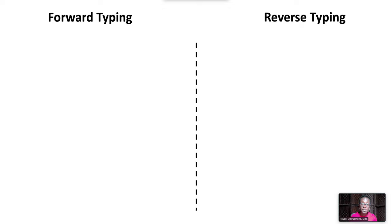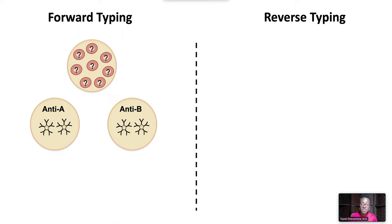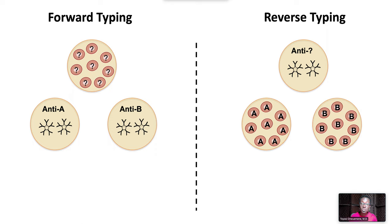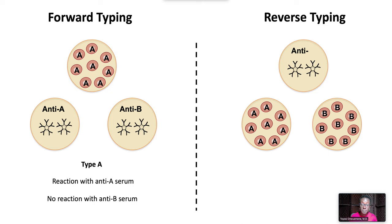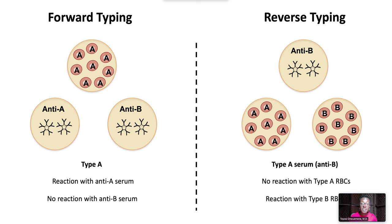In forward typing, unknown patient red blood cells are tested against known anti-A and anti-B serum. In reverse typing, unknown patient serum is tested against known type A and type B red cells. If the unknown red cells are type A, forward typing results will show a reaction with anti-A serum and no reaction with anti-B serum. In reverse typing, the serum which contains anti-B antibodies will cause no reaction with type A red cells and a reaction with type B red cells.